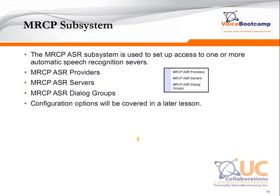The MRCP subsystem — Media Resource Control Protocol — is an ASR subsystem used to set up access to one or more automatic speech recognition engines. In order to configure this, you must define the providers, the servers, and the dialogue group. We will take a look at the configuration later in this course.